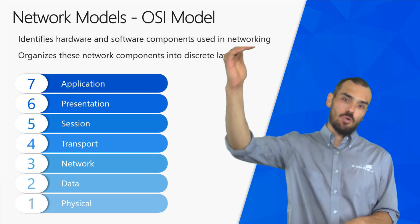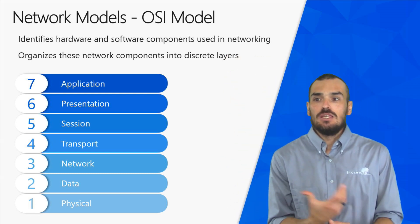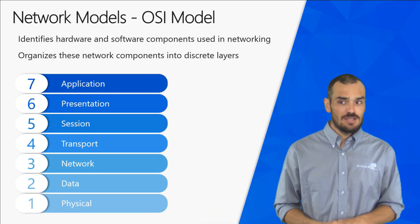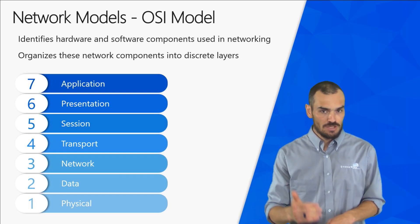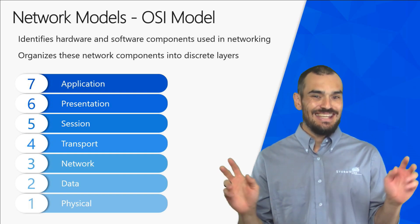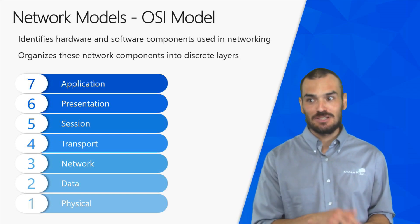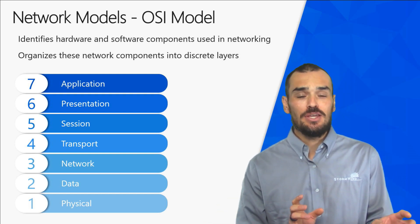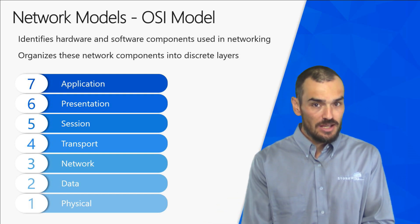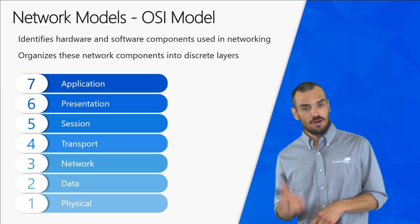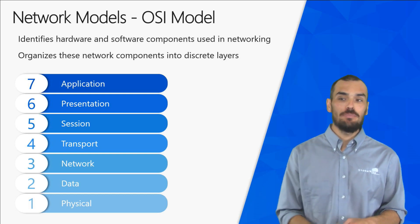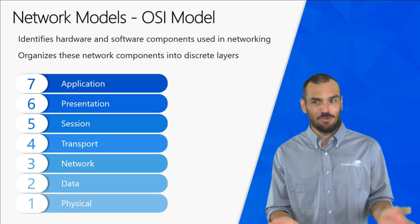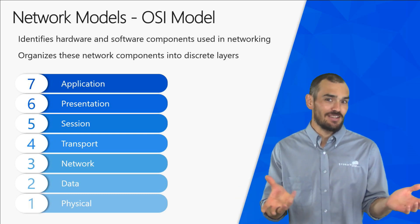When talking about going down the OSI model, this is essentially the equivalent of sending a piece of data from one system to another — you start at the top of the model, layer seven, and go down. This is officially called encapsulation. When talking about going up the OSI model, this is the equivalent of receiving data; you start at the bottom, layer one, and go up. This is officially called de-encapsulation, or de-capsulation depending on which book you read — both refer to the same thing.